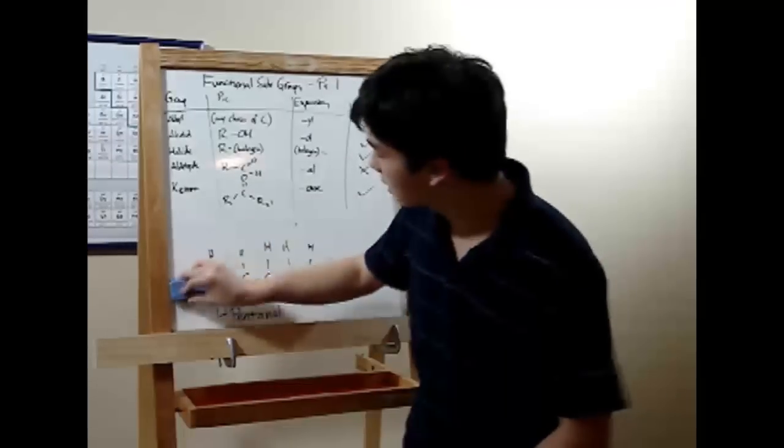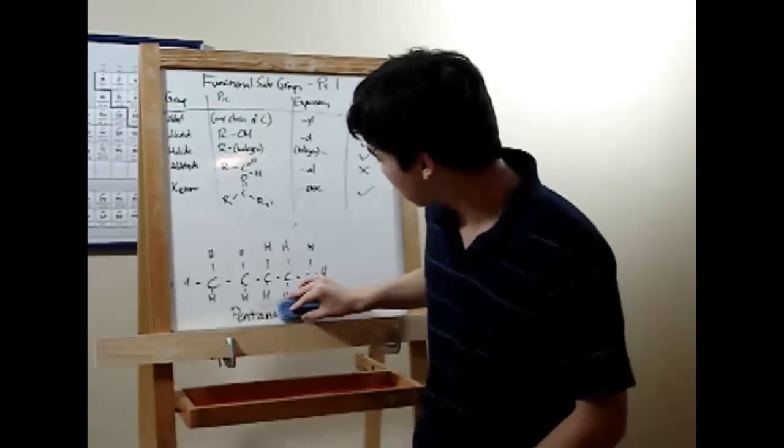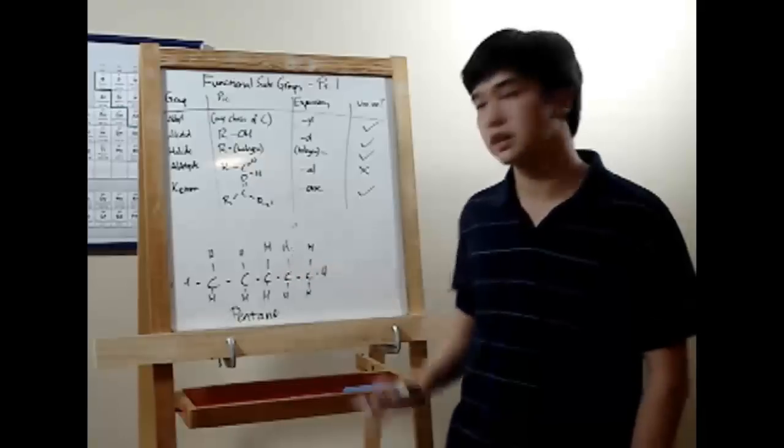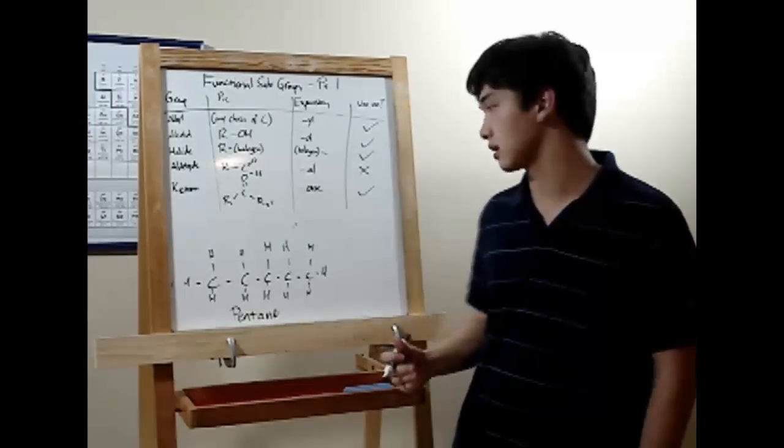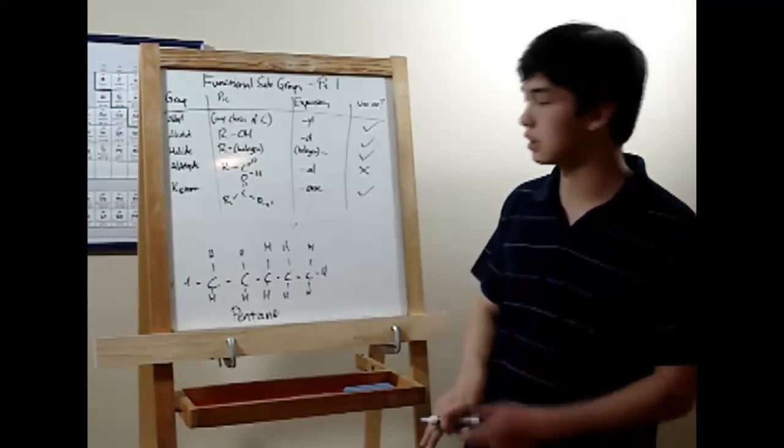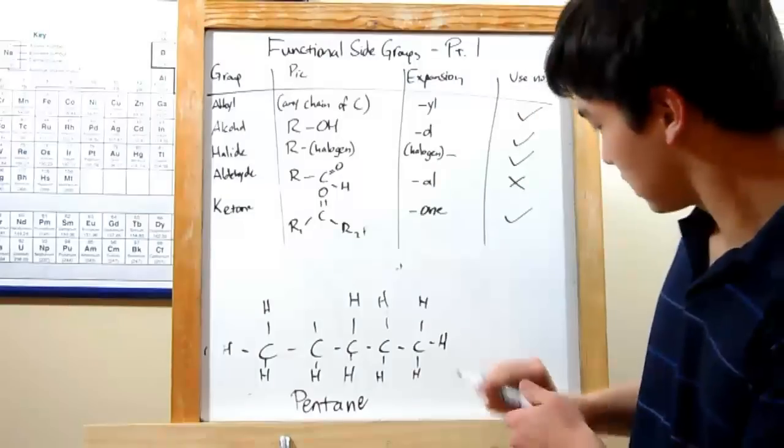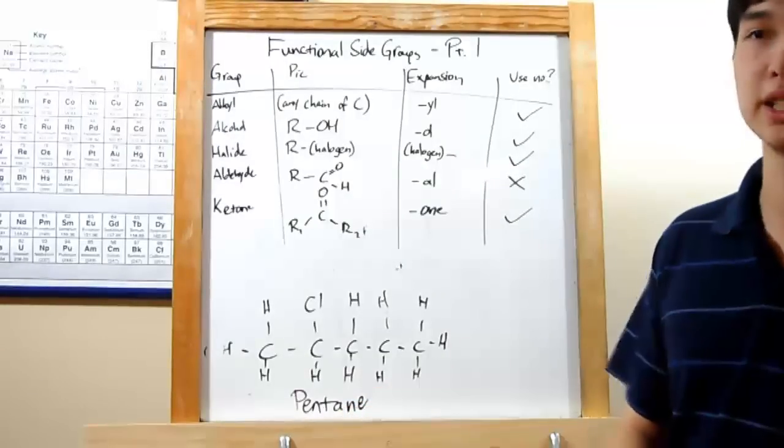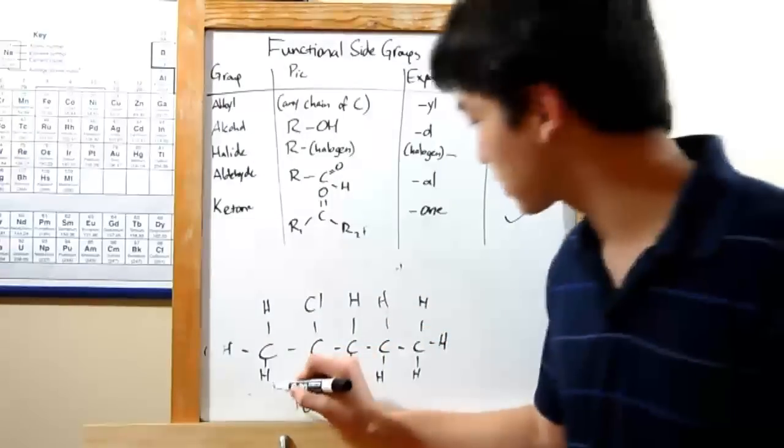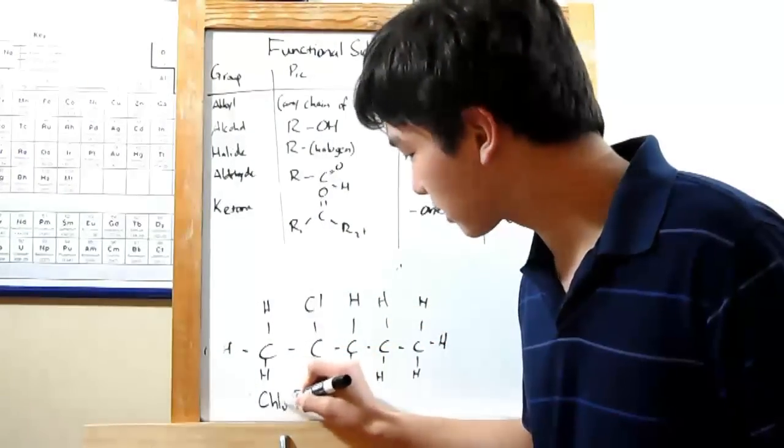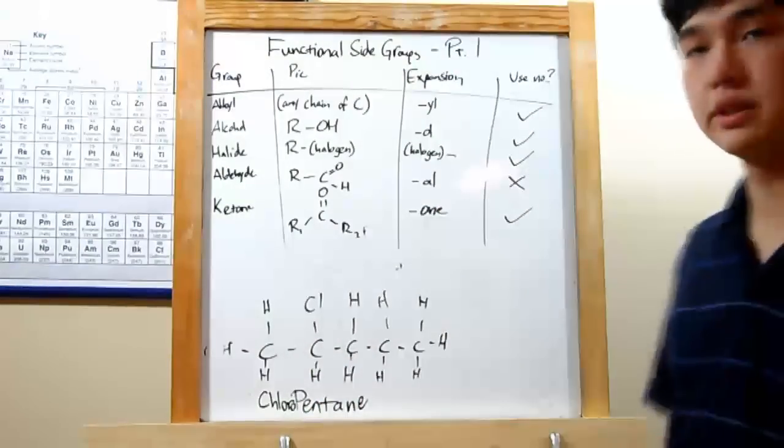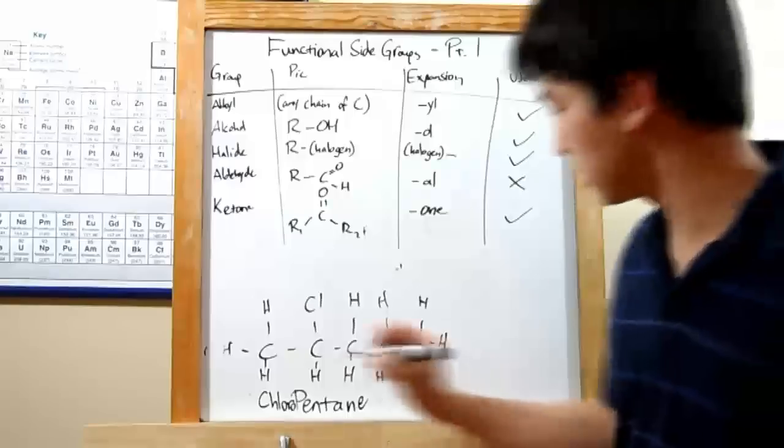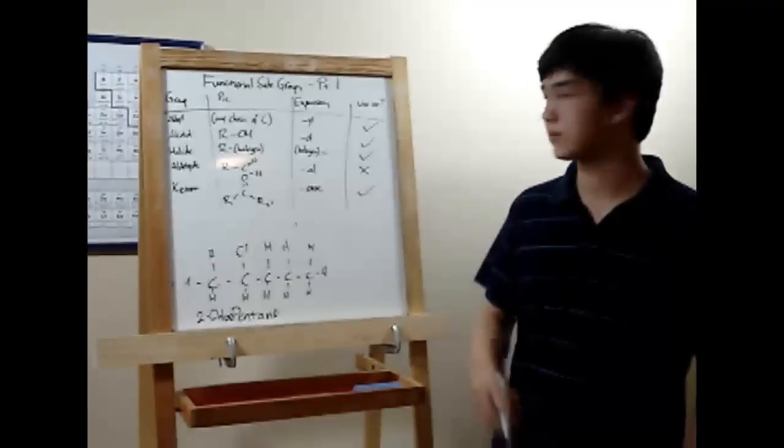Okay. Next up is the halide. The halide is similar and actually quite similar. It's just a halogen attached somewhere in here. Remember, halogens are group seven on the periodic table. So let's put in a chlorine. To name a halide, simply take part of the halogen name and attach it to your main chain's name. Since we've got a chlorine, we're going to call this chloropentane. And again, use a number to indicate what carbon it's on. So two is your smallest one. This is going to be two chloropentane.